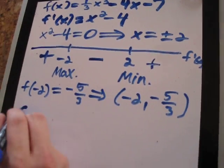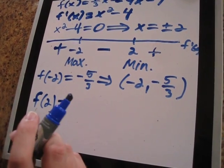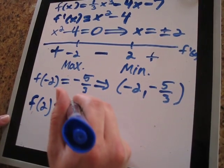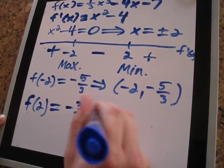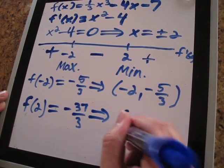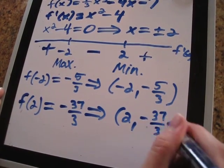And then we can do the same thing with 2 to find the coordinates of the local minimum. And when we plug 2 into this function, we will get f of 2 equals negative 37 over 3. So the coordinates of the local minimum of this function are 2, negative 37 over 3.